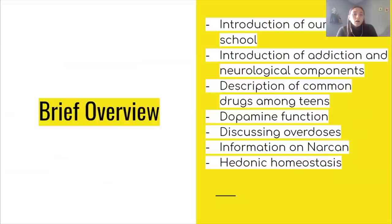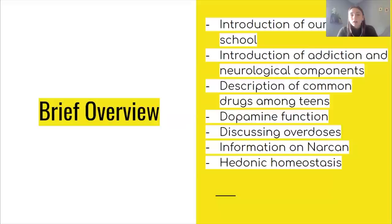Here's a brief overview of our presentation. We're going to introduce ourselves, and we're going to talk about addiction, neurons, and their components. We're going to speak on the components of drugs and all the common ones among teens. We're going to talk about dopamine, overdoses, how Narcan can reverse an overdose, and chronic homeostasis, and a few other short topics.